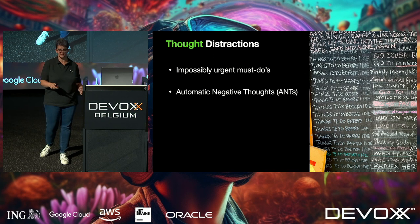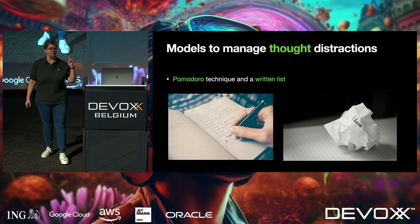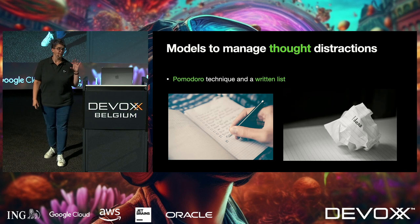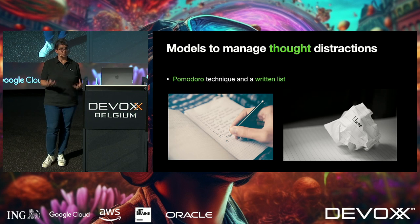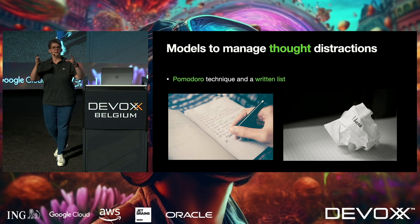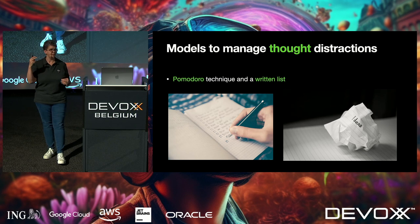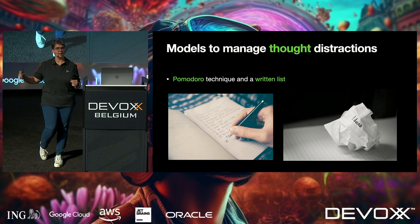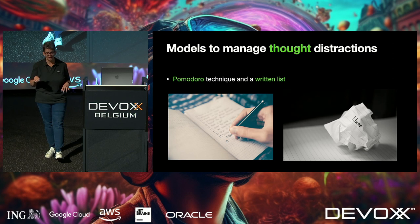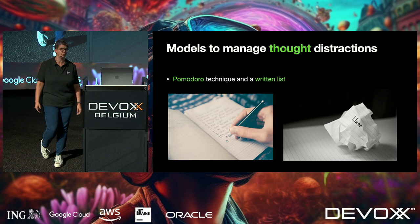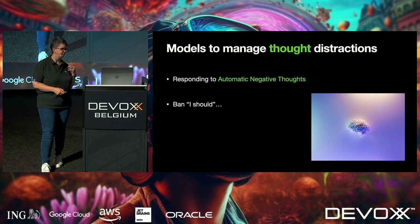For the urgent must-dos, I got advice from somebody who identifies as neurodivergent — they use the Pomodoro technique. They work for 25 minutes with a pen and paper next to them, and every time a 'phone the dentist, pick up the kids' thought comes in, they just write it down. At the end of 25 minutes they look at the list and ask: how many of these do I actually need to do right now? Maybe one or two. Do those, screw up the list, put it in the bin, start again.